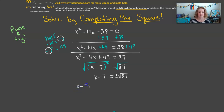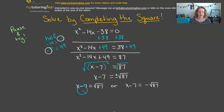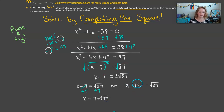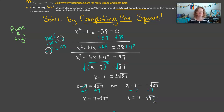We have x minus 7 equals positive square root of 87, or x minus 7 equals negative square root of 87. Adding 7 to both sides of each equation — the square root of 87 and 7 are not like terms, so we keep them separate. Our two answers are x equals 7 plus the square root of 87, and x equals 7 minus the square root of 87. The answers look different than before, but we followed the same rules.